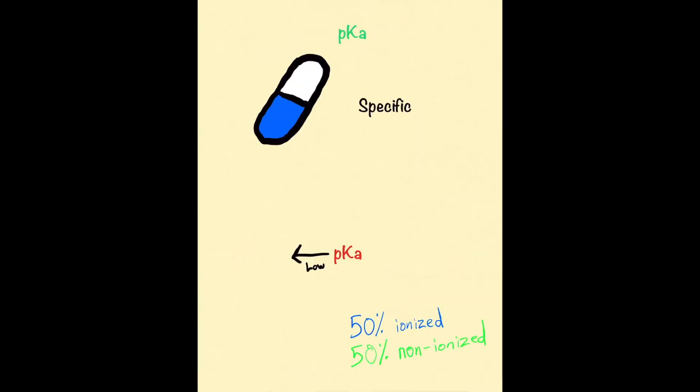pKa is drug-specific, meaning every drug has a different pKa. The pKa is defined as the negative log of the equilibrium constant for the dissociation of the acid or base.